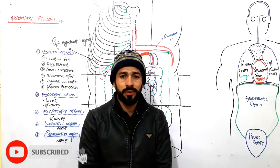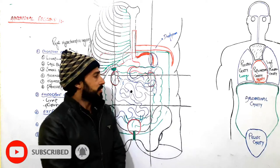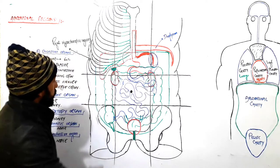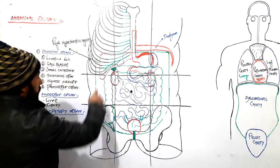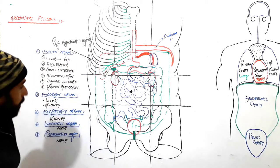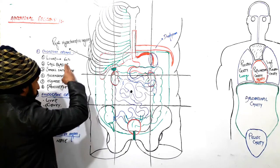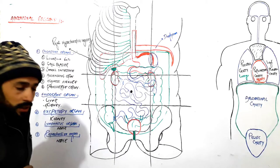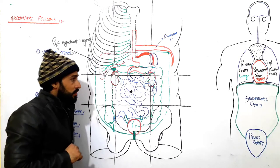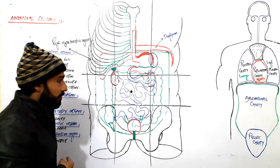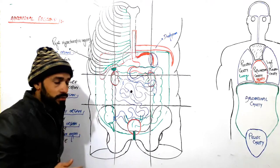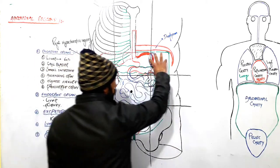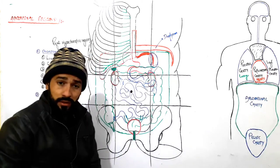Hello dear friends, assalamu alaikum and welcome back to this lecture. We are discussing the abdominal regions and the organs present in them. In the previous lecture I discussed the organs of the right hypochondriac region, and before that I covered how to divide the abdomen into different regions. Now in this lecture we are discussing the organs of the left hypochondriac region.